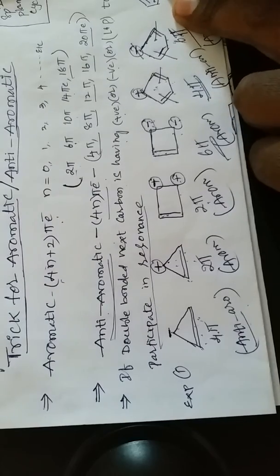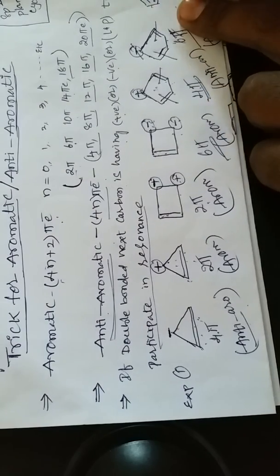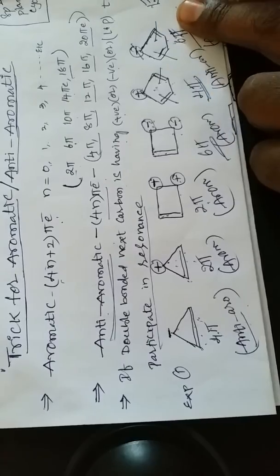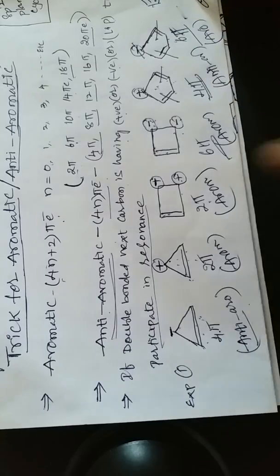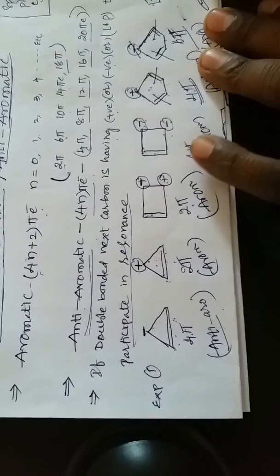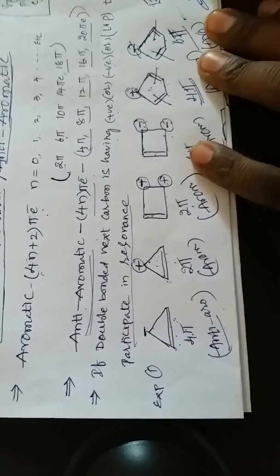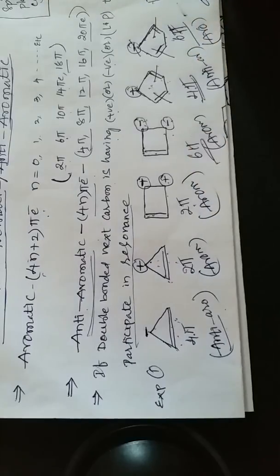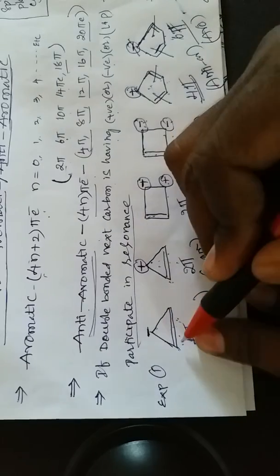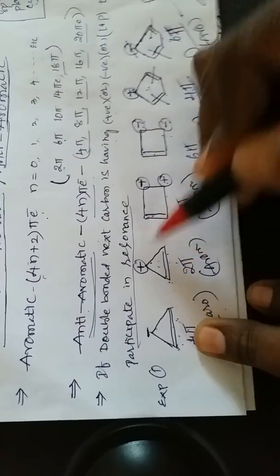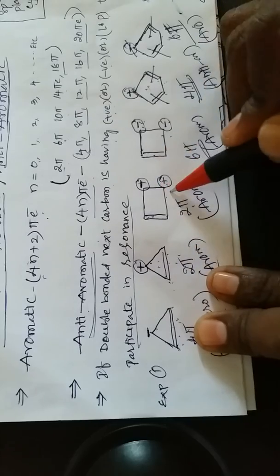Last example: double, single, double, then single with a positive charge. Total here is only four pi electrons, so this belongs to anti-aromatic. To summarize the trick: aromatic compounds have carbons with sp2 hybridization — all carbons are sp2 — and follow the 4n+2 pi electron rule.